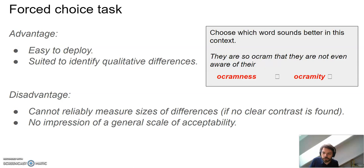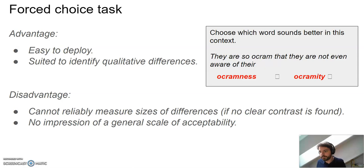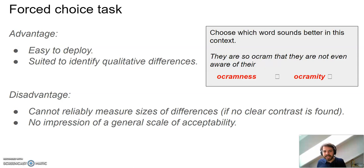One way to resolve this is to enforce differences by doing a forced choice task. Now you're not asking the speaker to evaluate a single form, but making them choose between two forms — they must choose one. For example: 'they are so ochram that they are not even aware of there' — and they must say either ochramness or ochramity, and cannot avoid choosing. The advantage is it's easy to deploy and well-suited to identify qualitative differences.